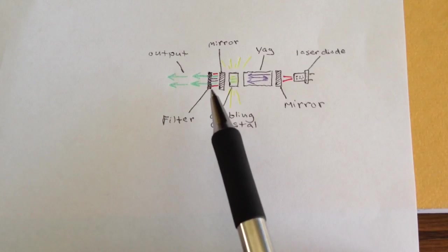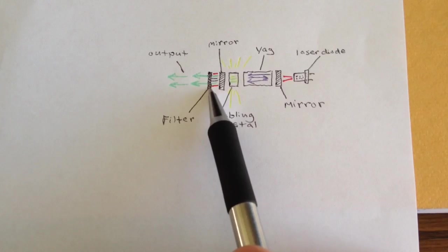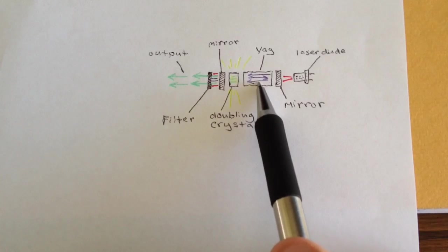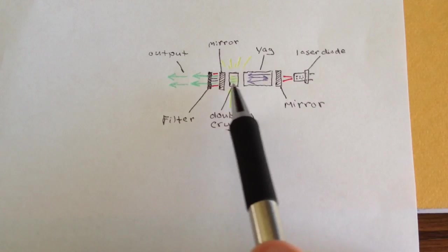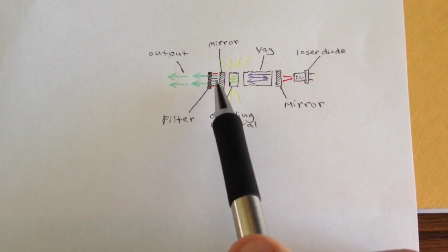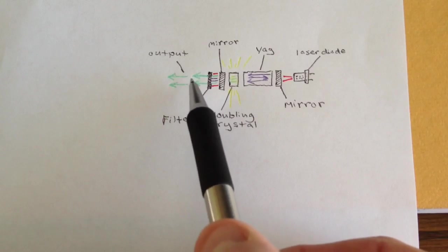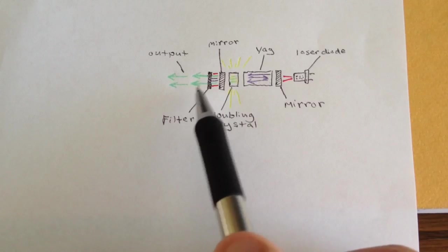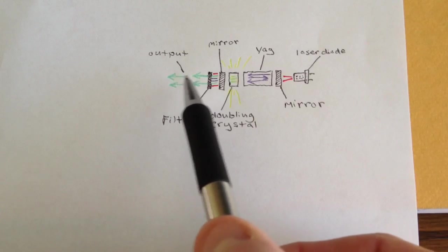To stop the other wavelengths that are not wanted, manufacturers put a filter on the front end of this arrangement so that the infrared wavelengths from the crystal here and from the diode laser are blocked, while only the 532 nanometers in the visible green is passed. So that's where you get your visible green output that's approximately 5 milliwatts or less for a pointer.